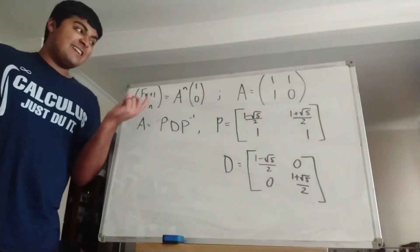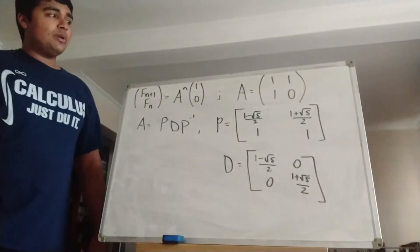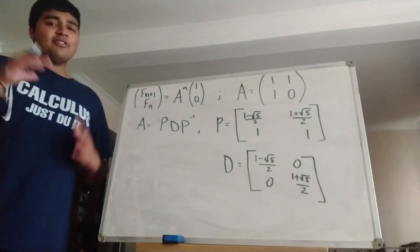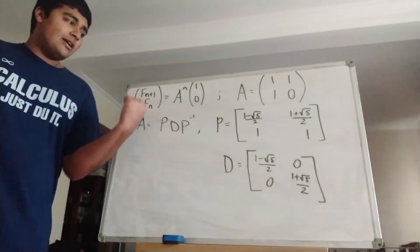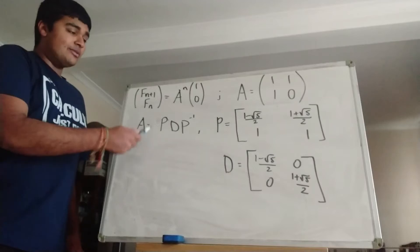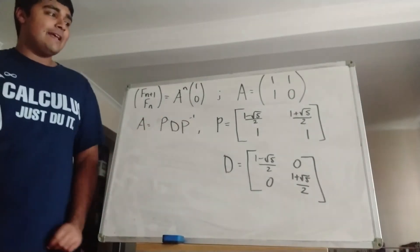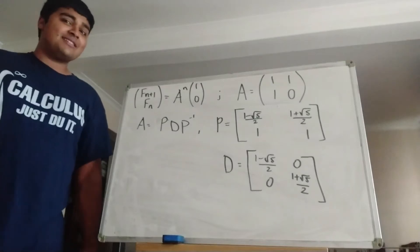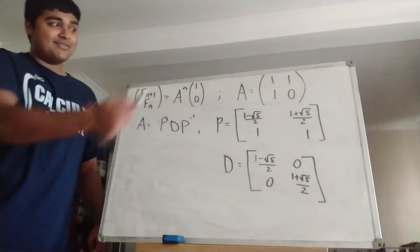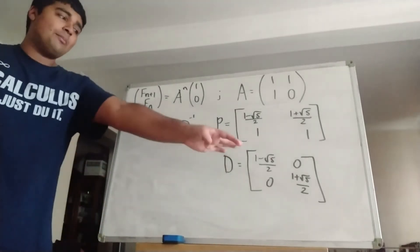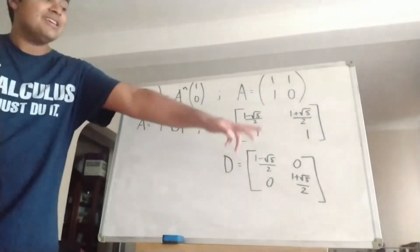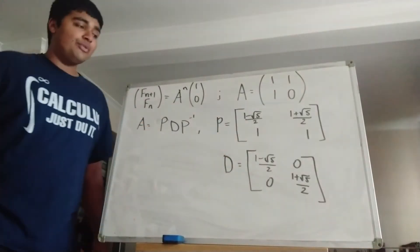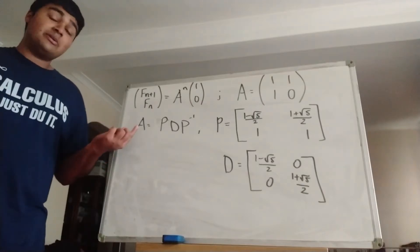So we just showed that Fn plus 1, Fn is equal to A to the n times the vector 1, 0. And A was this matrix here: 1, 1, 1, 0. Now, to diagonalise matrix A requires knowledge of eigenvalues and eigenvectors. But essentially, once you've done that, you get that A equals P D P inverse, where P is the matrix with entries 1 minus root 5 over 2, 1 plus root 5 over 2, 1, 1 — so you can see the golden ratio is hidden in here. And D is the diagonal matrix with entries 1 minus root 5 over 2 and 1 plus root 5 over 2 on the diagonal, and zeros elsewhere. The reason we use the letter D is because this is a diagonal matrix — its only non-zero elements are on the diagonal.